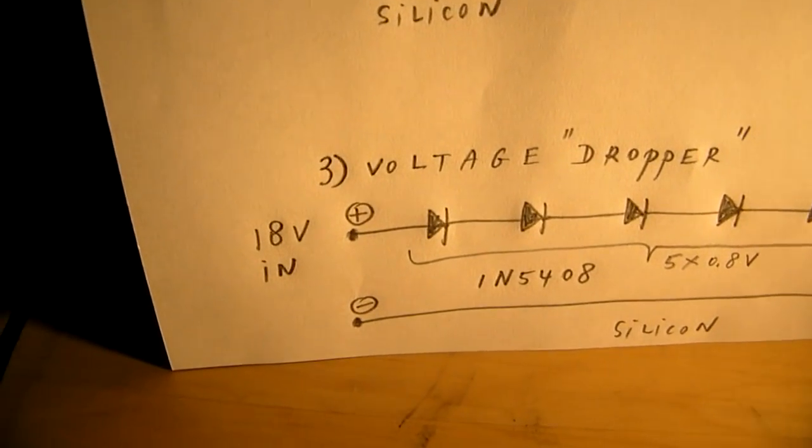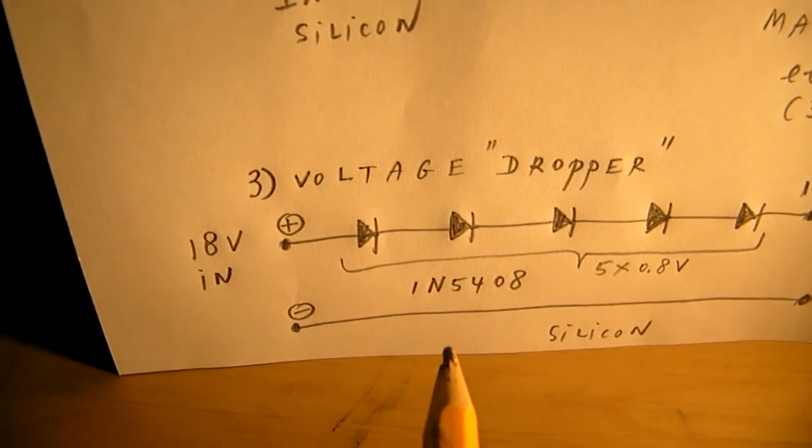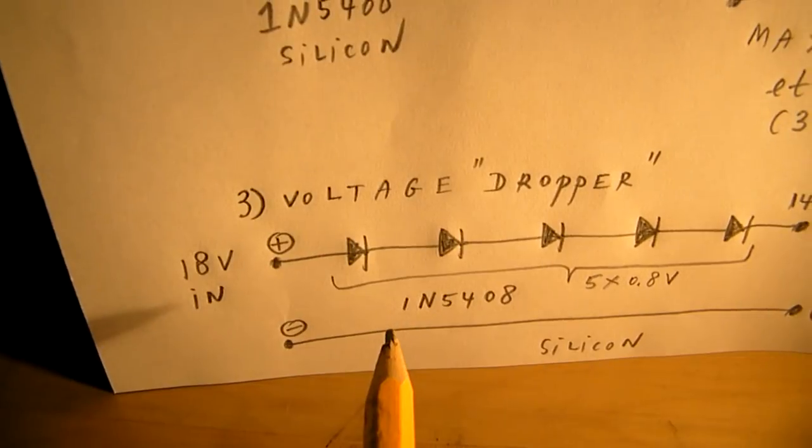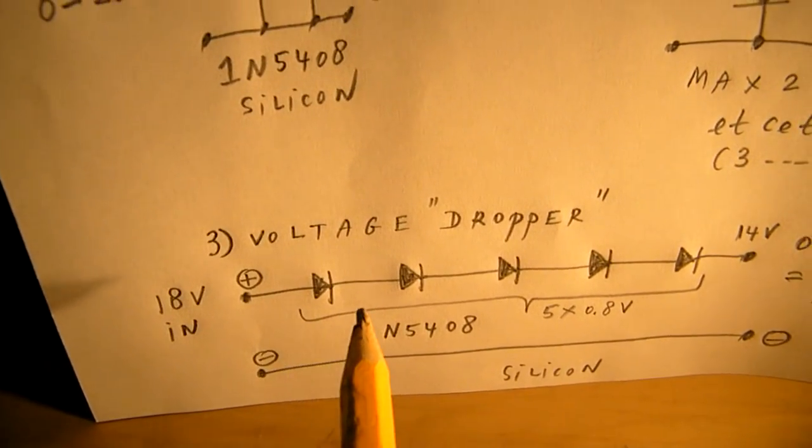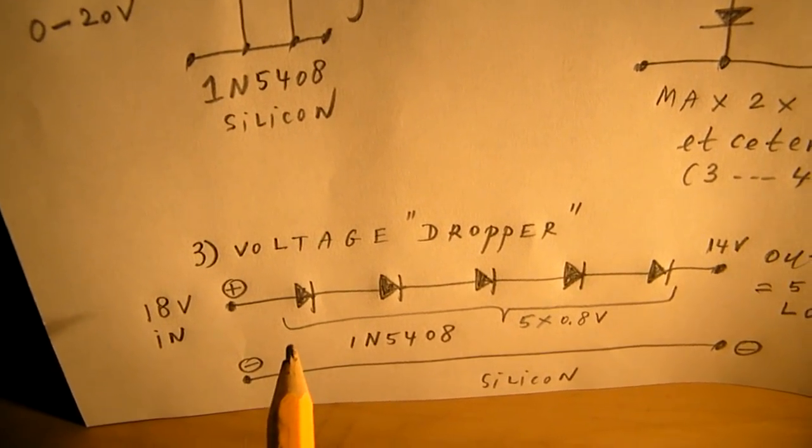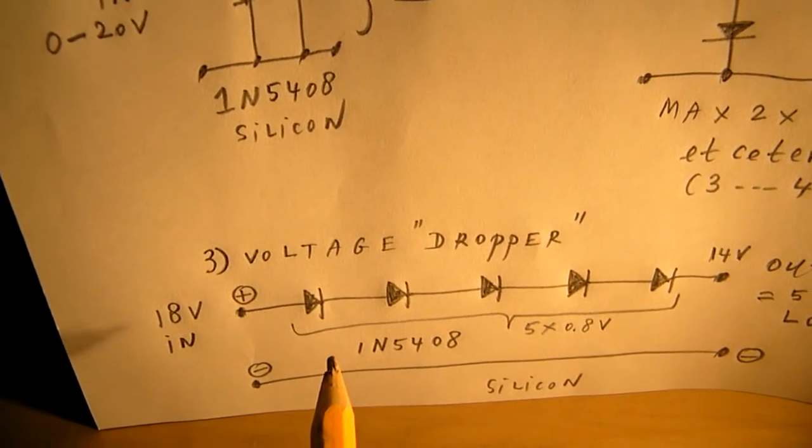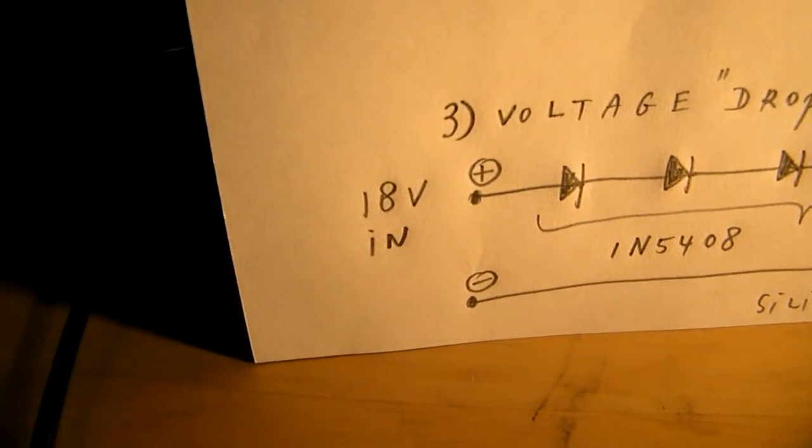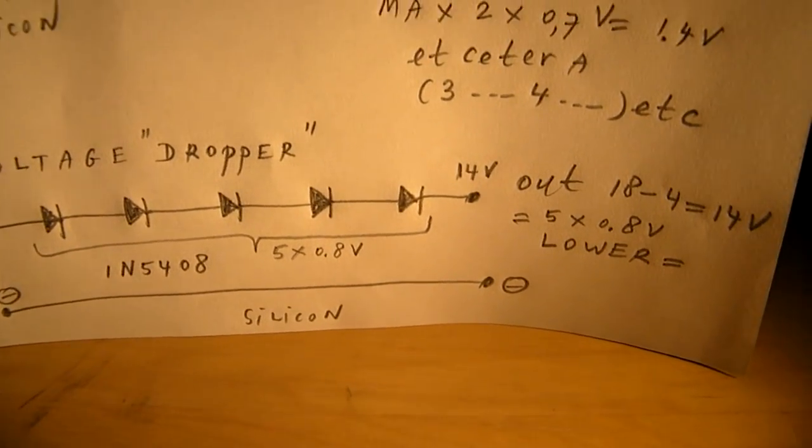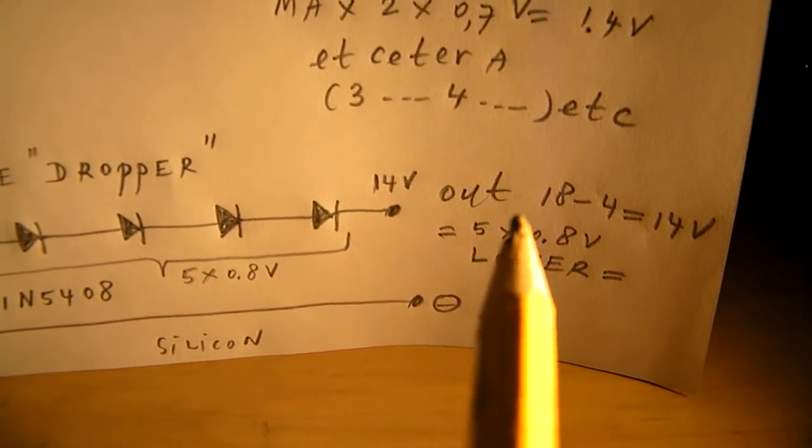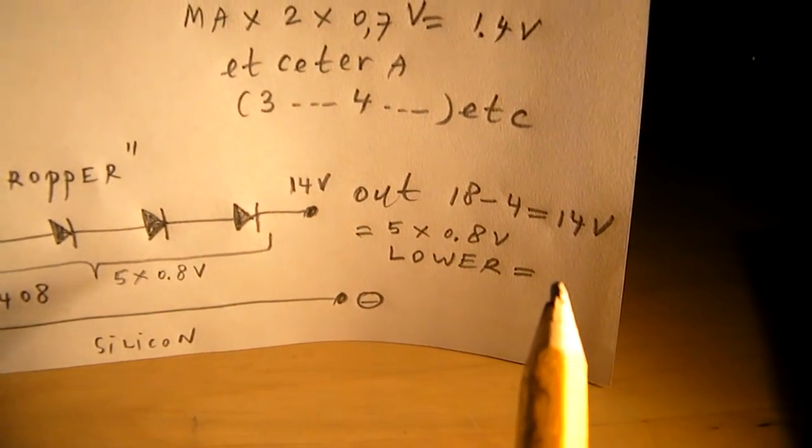The second application is the so-called voltage dropper. I also use here, it's an advice, the 1N5408 because it's a sturdy diode. Every diode subtracts 0.7 or 0.8 volts from the input voltage. So 18 volts in, and here 18 subtracted with 4 volts is 14 volts out.